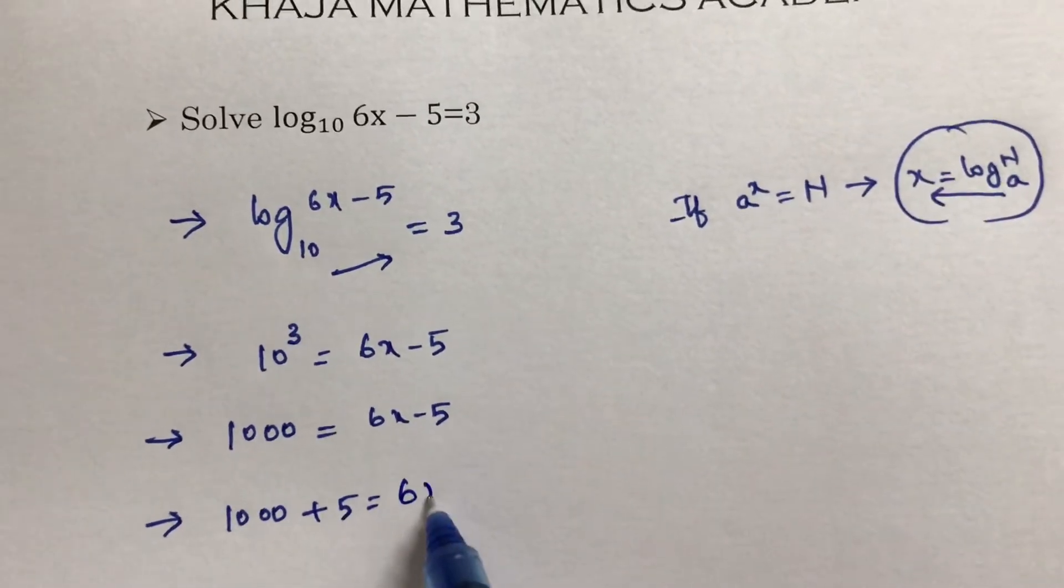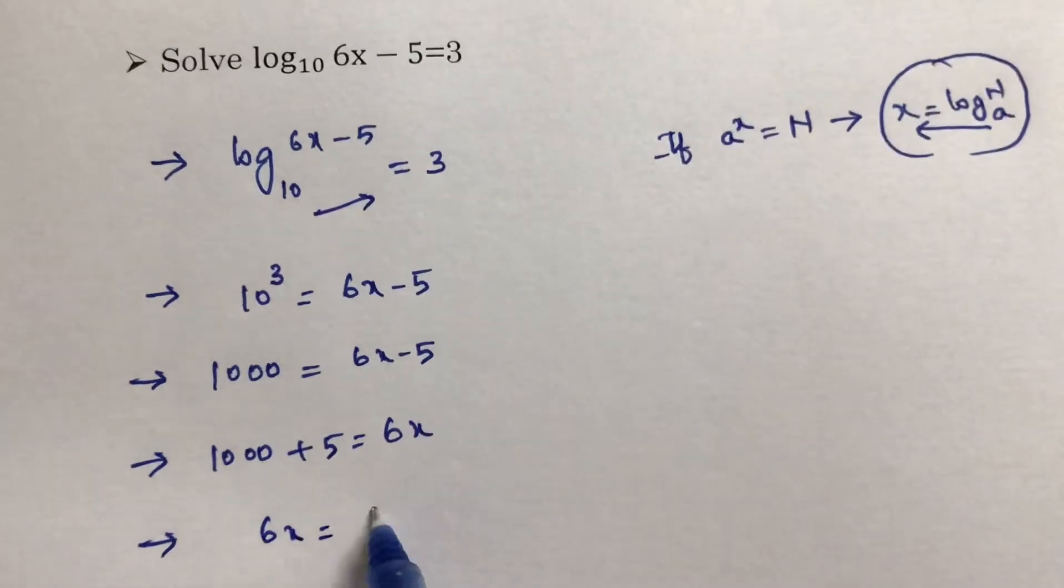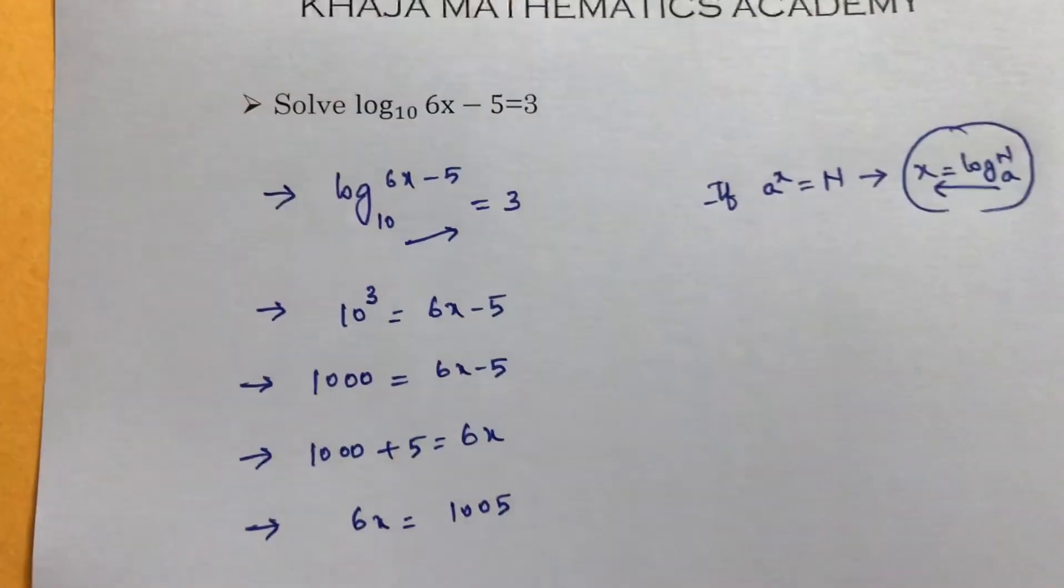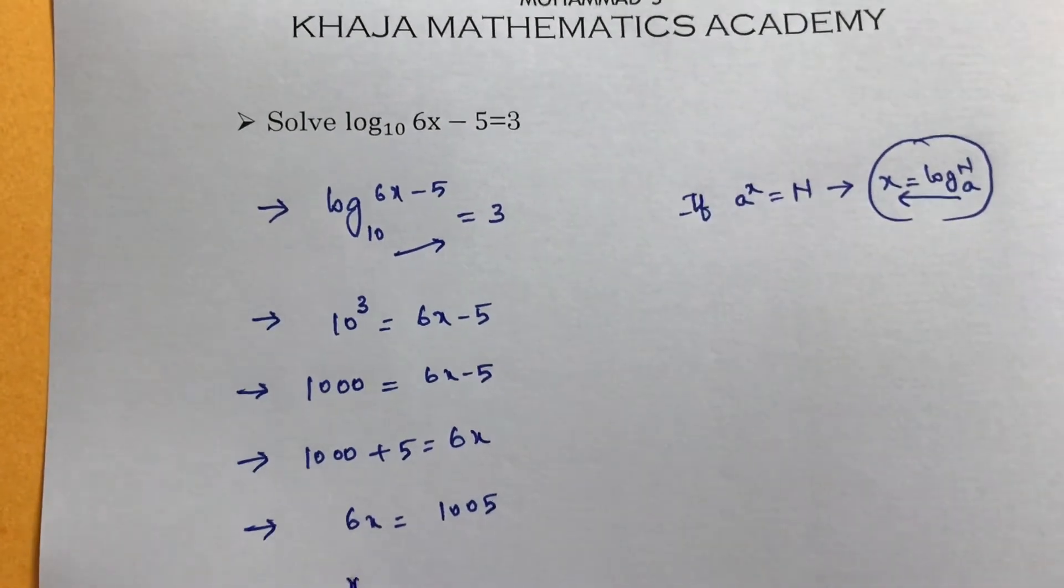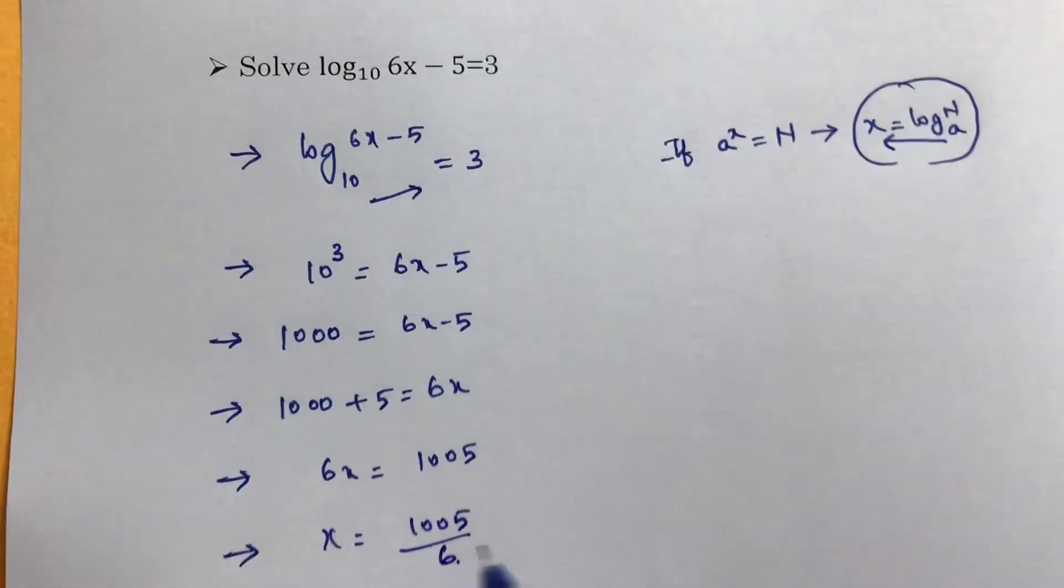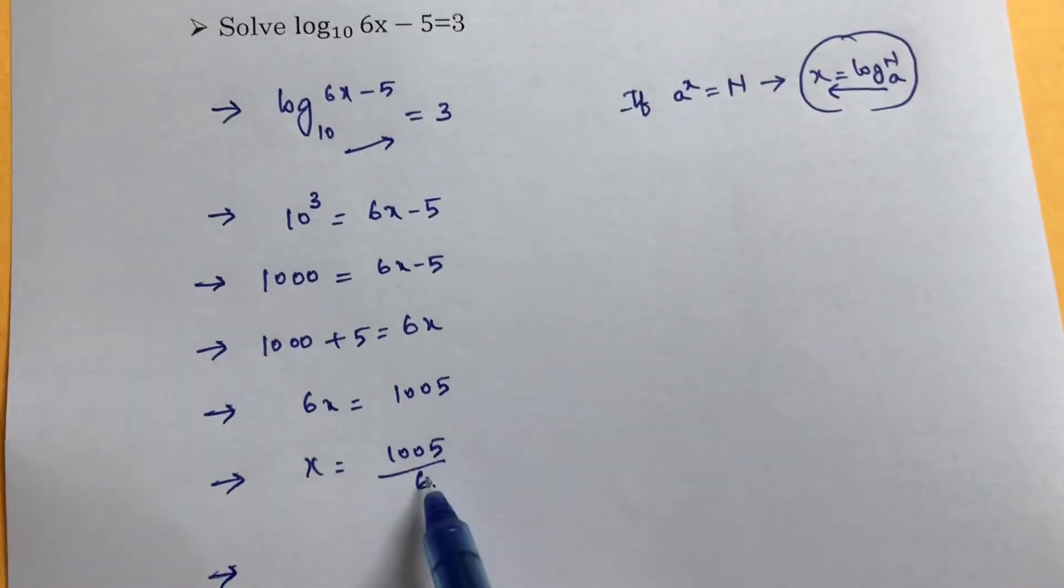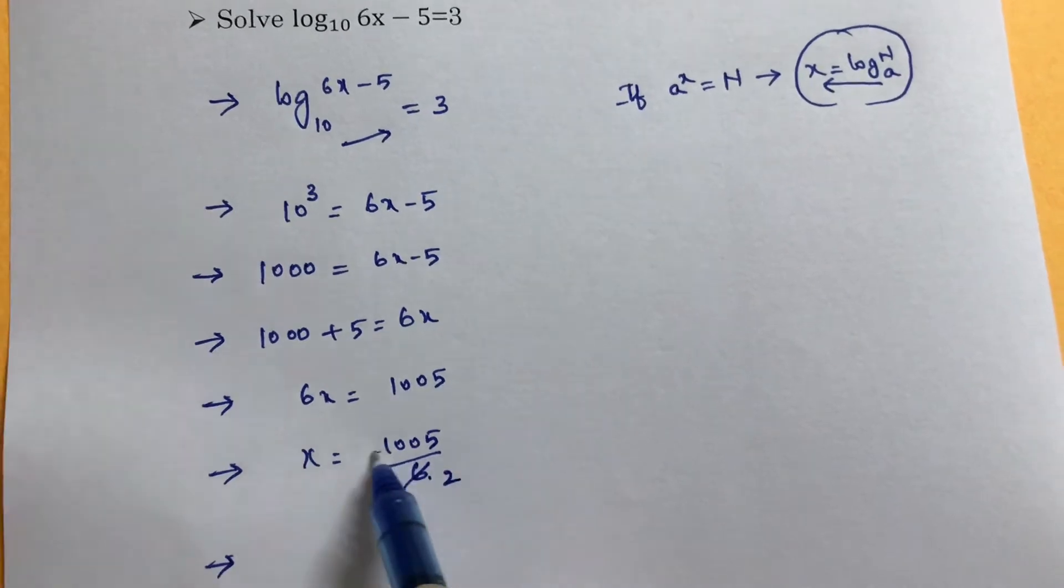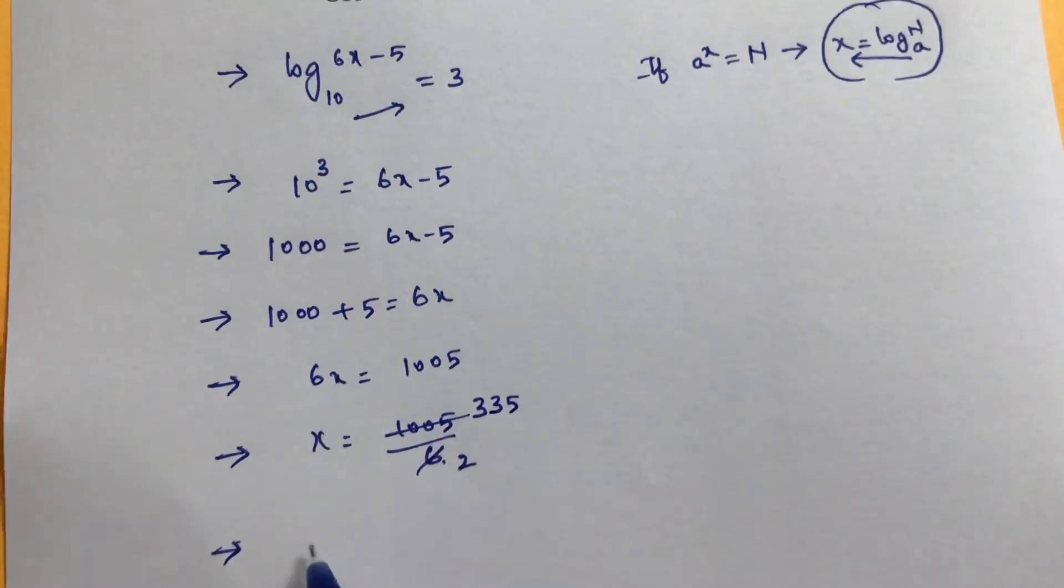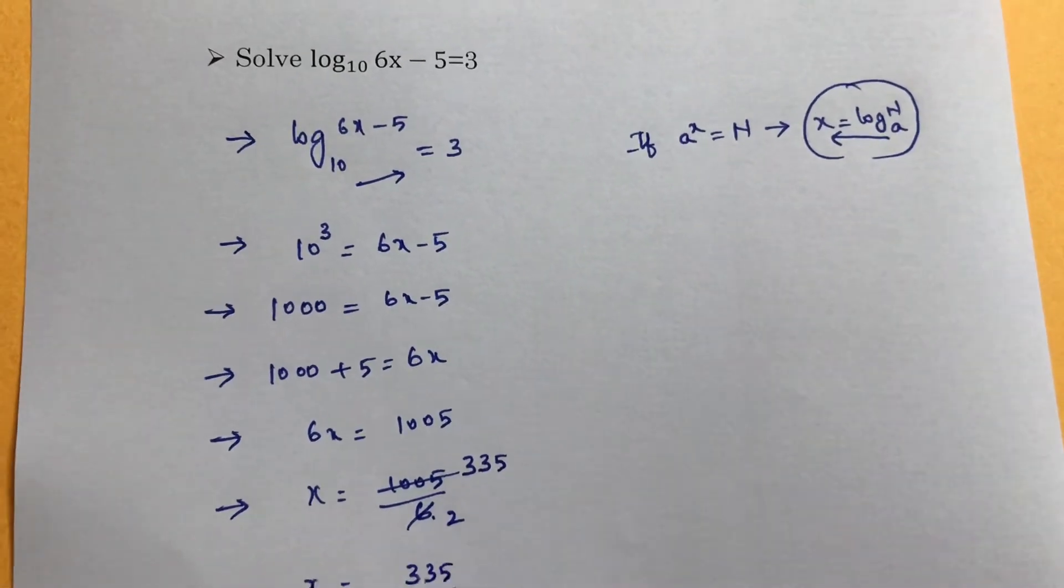...is 6x. So you can write 6x = 1005, so x = 1005/6. If we cancel in the 3 times table (3×2, 3×3, 3×3, 3×5), the x value is 335/2.